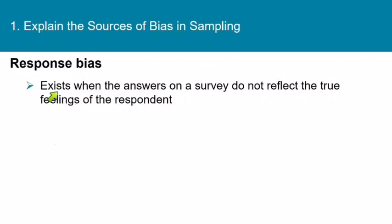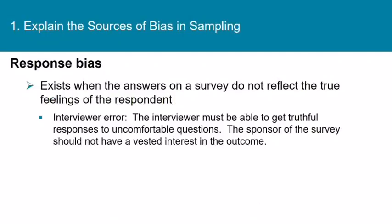Response bias exists when the answers on a survey do not reflect the true feelings of the respondent. For example, interviewer error: the interviewer must be able to get truthful responses to uncomfortable questions. Also, the sponsor of the survey should not have a vested interest in the outcome. When somebody gives a half-hearted answer and instead of probing deeper to find out how that person really feels, the interviewer just records whatever they said the first time — that's interviewer error.